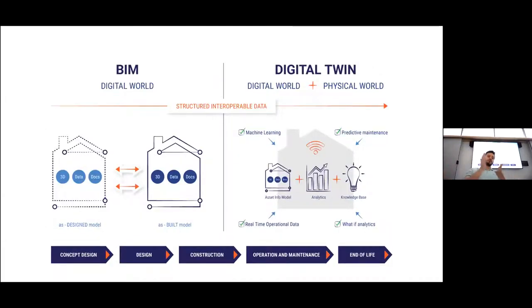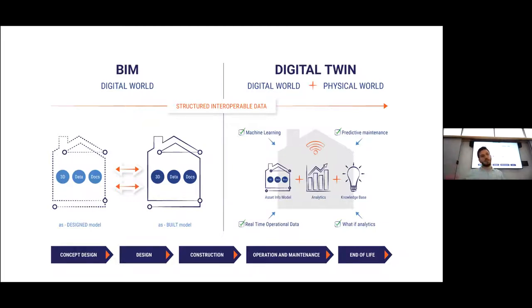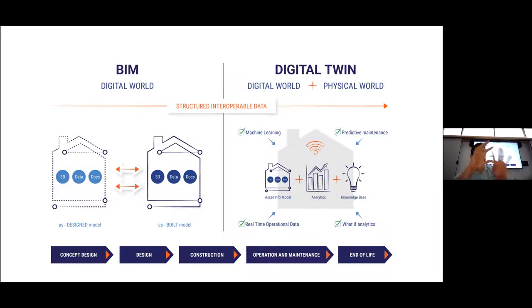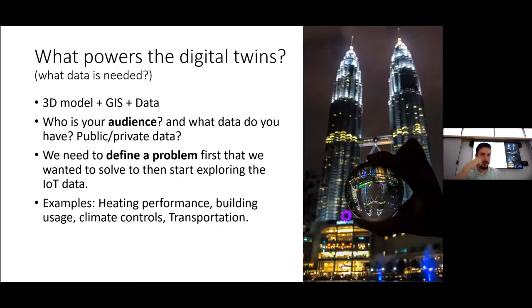Another diagram draws a line between BIM and digital twin. BIM typically happens in the conceptual, design, and construction phase. If you want to use that BIM model in the operation, maintenance, and end-of-life phases efficiently, it must evolve into a digital twin. A BIM that is disconnected from the physical model is not the most effective way of managing a building — you need connectivity between the digital and physical models.